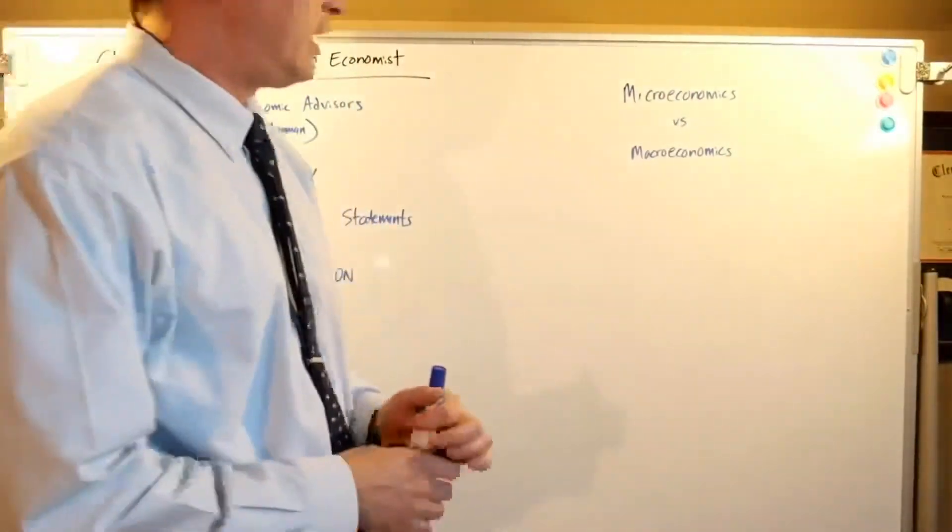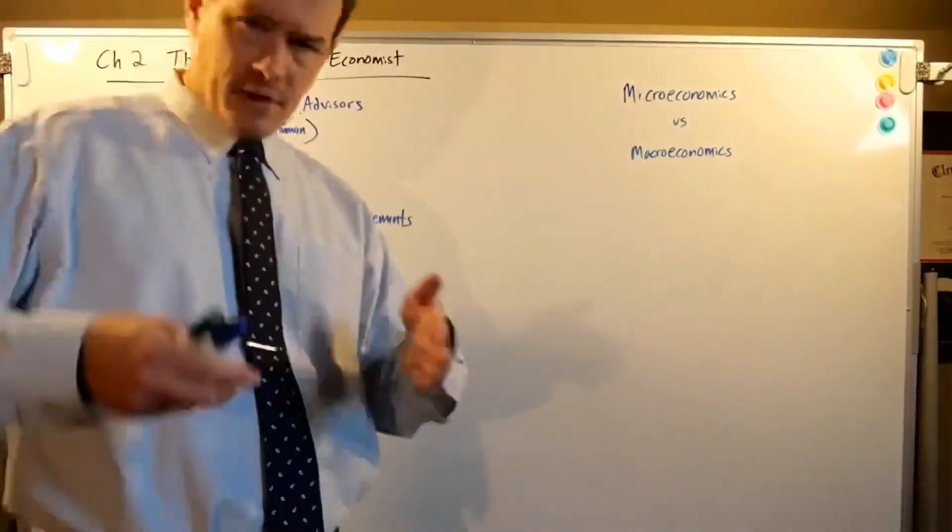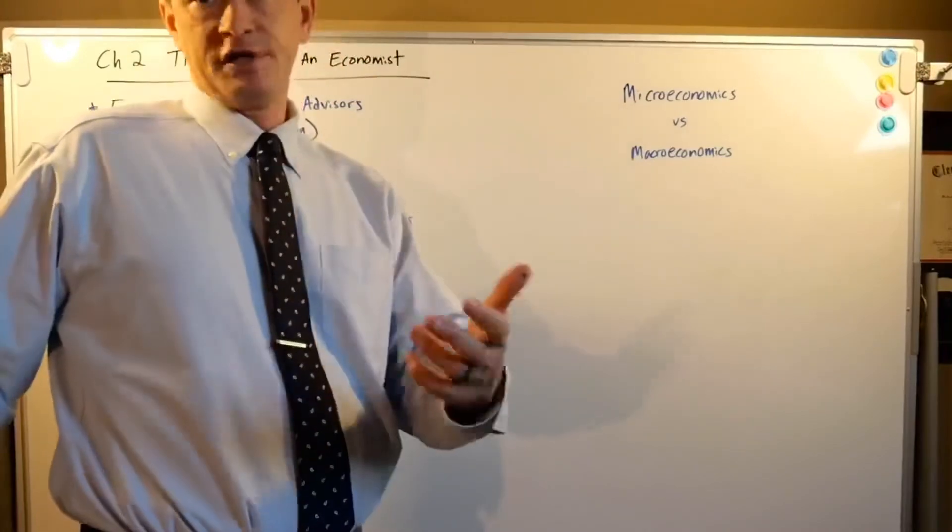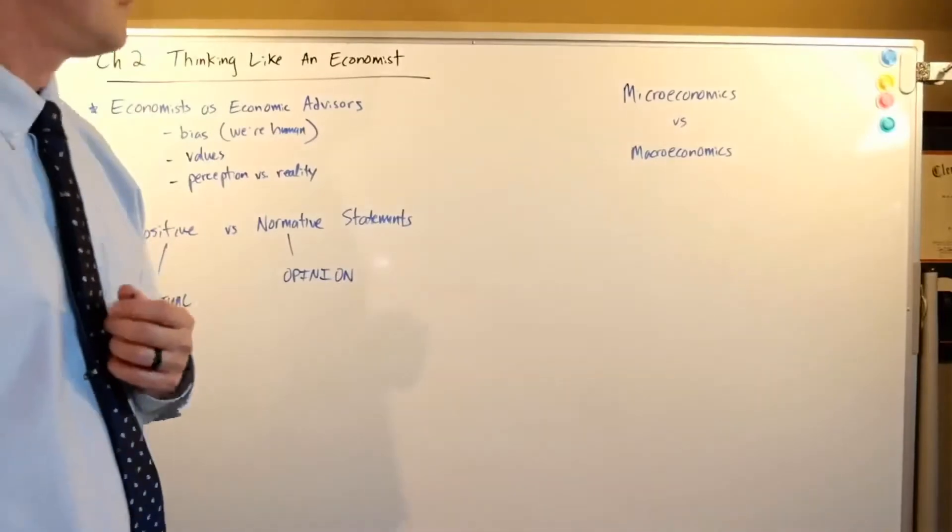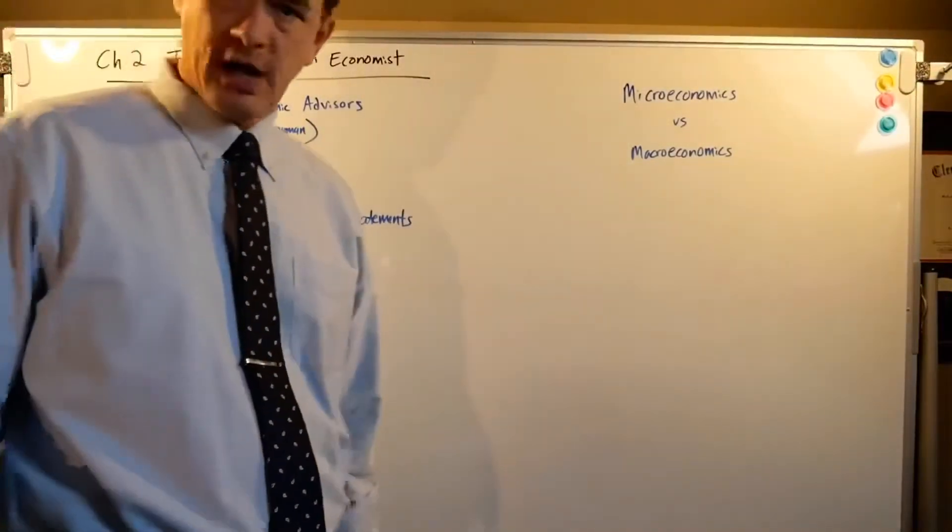Microeconomics - micro, looking down specifically at individual decisions by firms and individuals. Nabisco - how many Oreos should they make? How many employees should this firm hire?